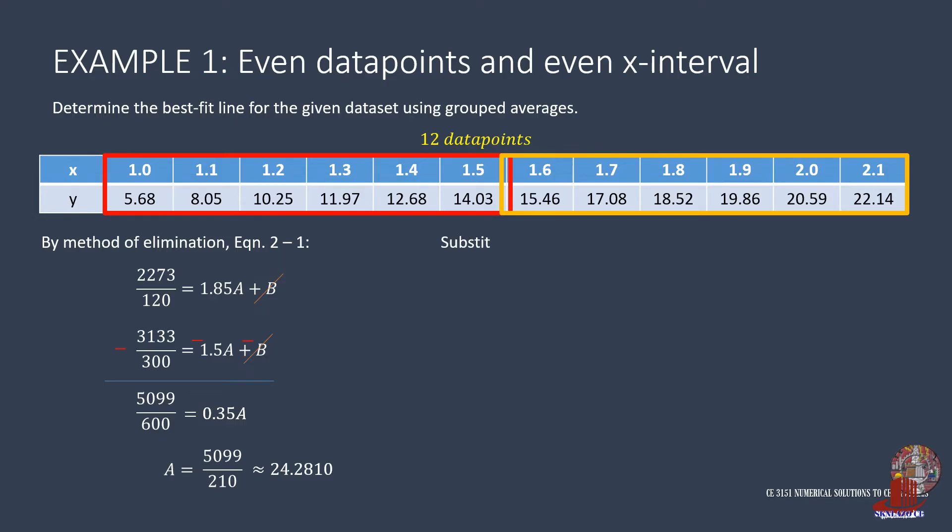Now plug a into the first equation to have 3133 over 300 as 1.5 times a, which is 5099 over 210 plus b. B is then negative 25.9781. With the variables a and b already determined, the linear equation y as ax plus b becomes y as 24.2810 of x minus 25.9781.